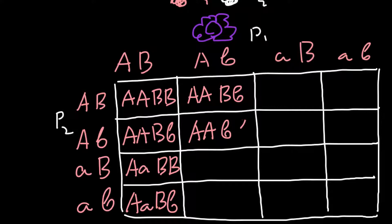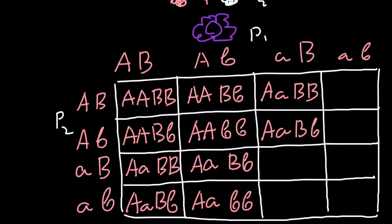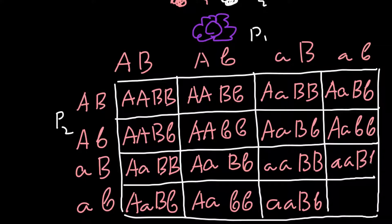Filling in the Punnett square, the genotypes across the 16 cells are: AA BB; AA Bb; Aa BB; Aa Bb; AA Bb; AA bb; Aa Bb; Aa bb; Aa BB; Aa Bb; aa BB; aa Bb; Aa Bb; Aa bb; aa Bb; aa bb.